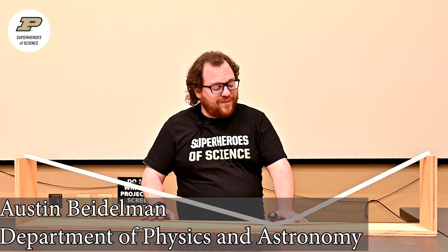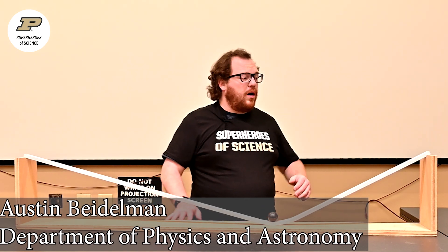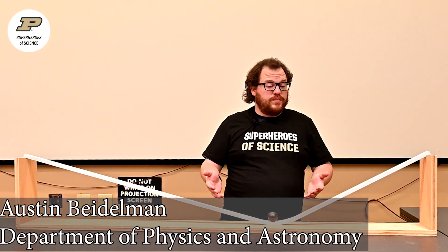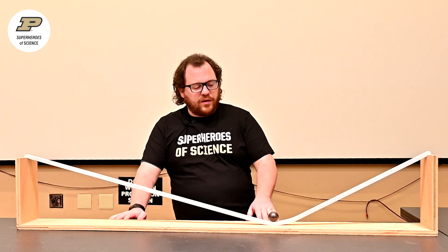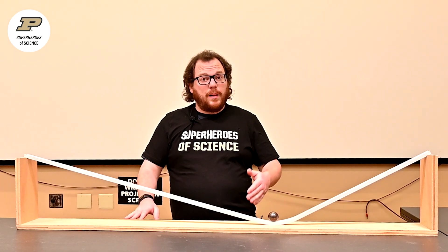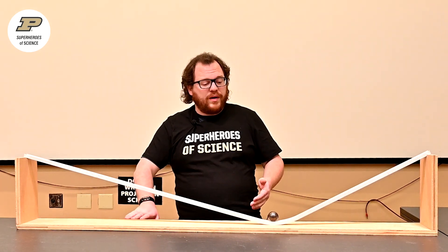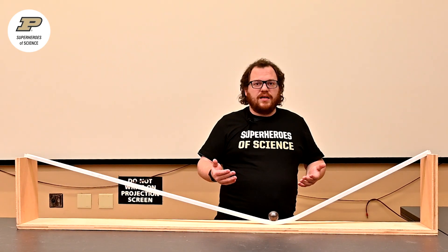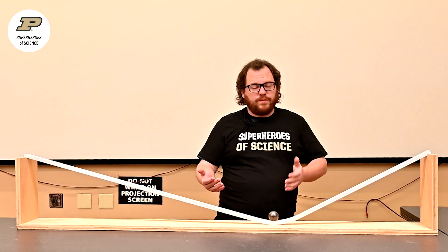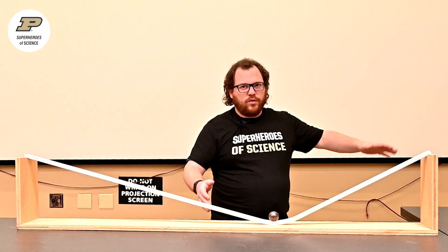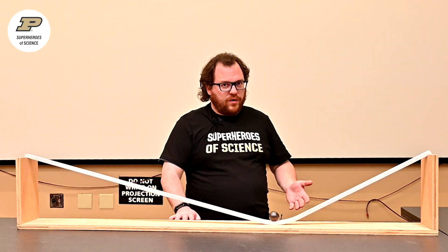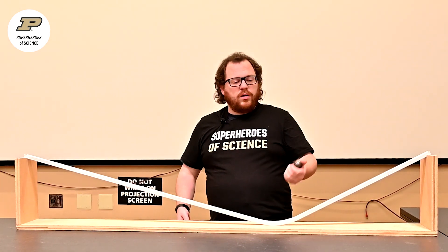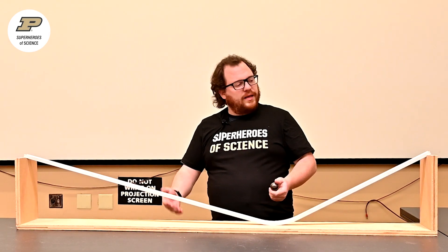What we have here today are what I call Galilean slopes. This is actually based on an experiment that Galileo was doing when he was looking and coming up with his ideas of inertia. This is way before Newton's law of inertia. So what he did is he had a ball on slopes like this.